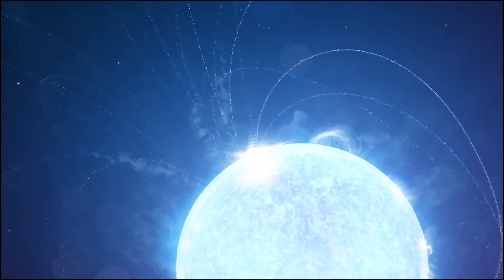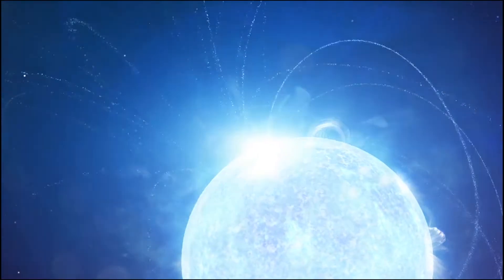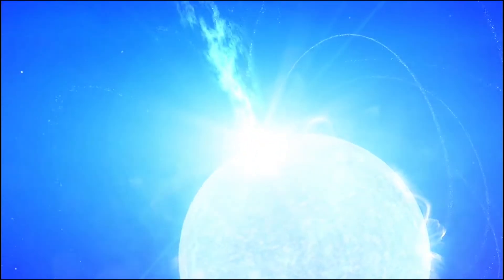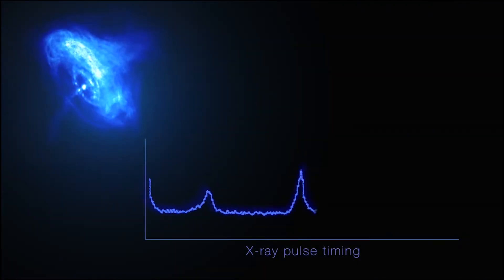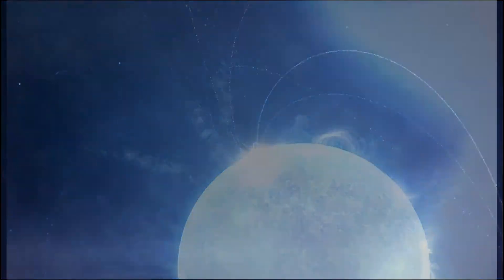As the neutron star spins, it streams out jets of particles from the poles at almost the speed of light. And these jets of particles sweep across the Earth. They can be heard as regular pulses. That's why we call them pulsars.